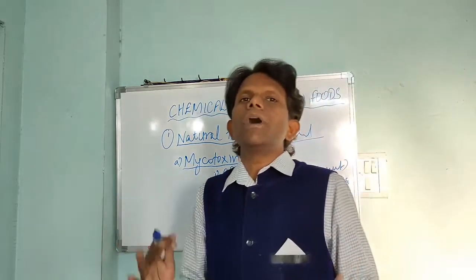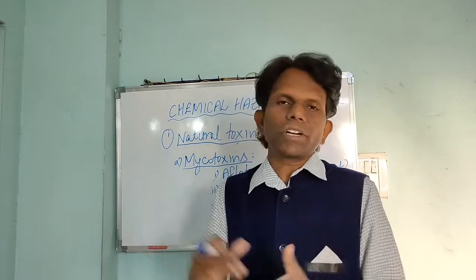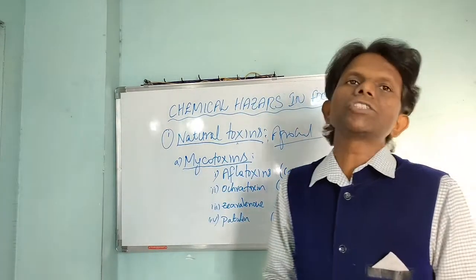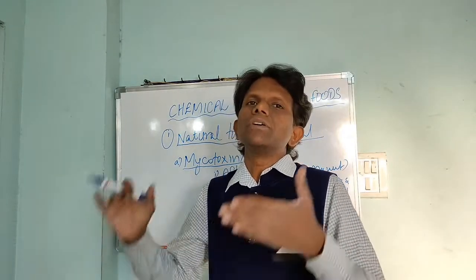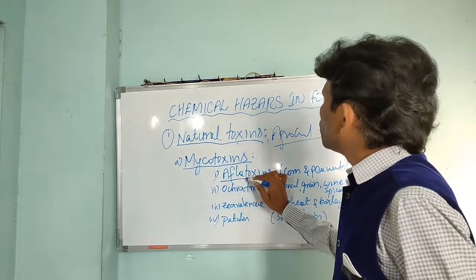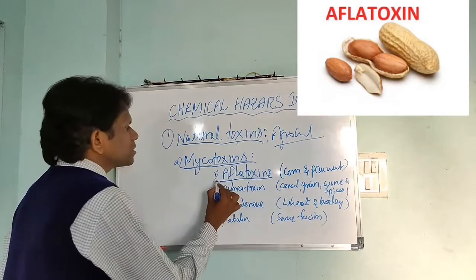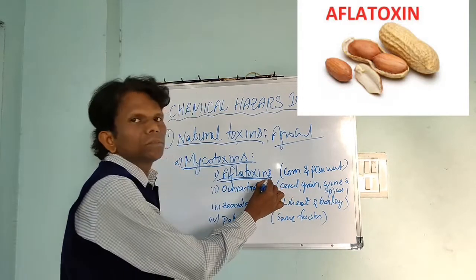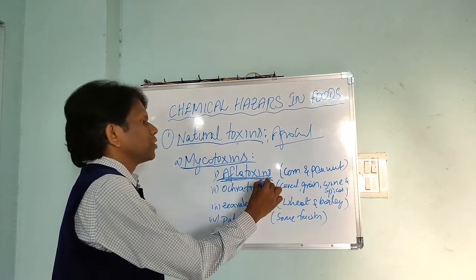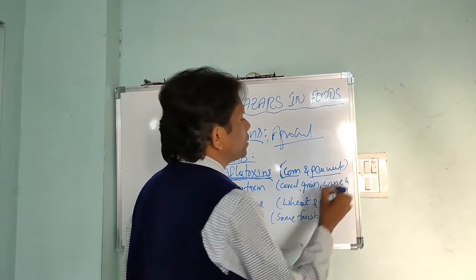There are about 100 to 200 kinds of mycotoxins which are produced by different kinds of microorganisms in food. Let us discuss a few of the mycotoxins which have the potential to cause illness in human beings. Among all natural mycotoxins, Aflatoxin is the most potent and causes liver cancer. Aflatoxin is a mycotoxin produced by certain kinds of molds during their metabolic activities, especially in corn fields and peanut fields.